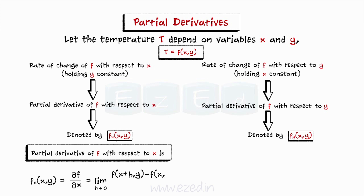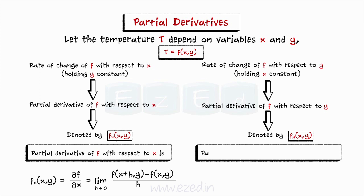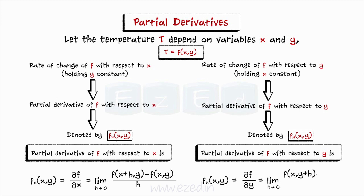In practice, we use our knowledge of single variable calculus to compute partial derivatives. Notice that we use the curly symbol del to denote partial differentiation rather than d, which we use for ordinary differentiation. Similarly, we define the partial derivative of f with respect to y as f sub y of (x, y) equal to del f by del y, which equals the limit as h tends to 0 of [f(x, y+h) minus f(x, y)] over h.